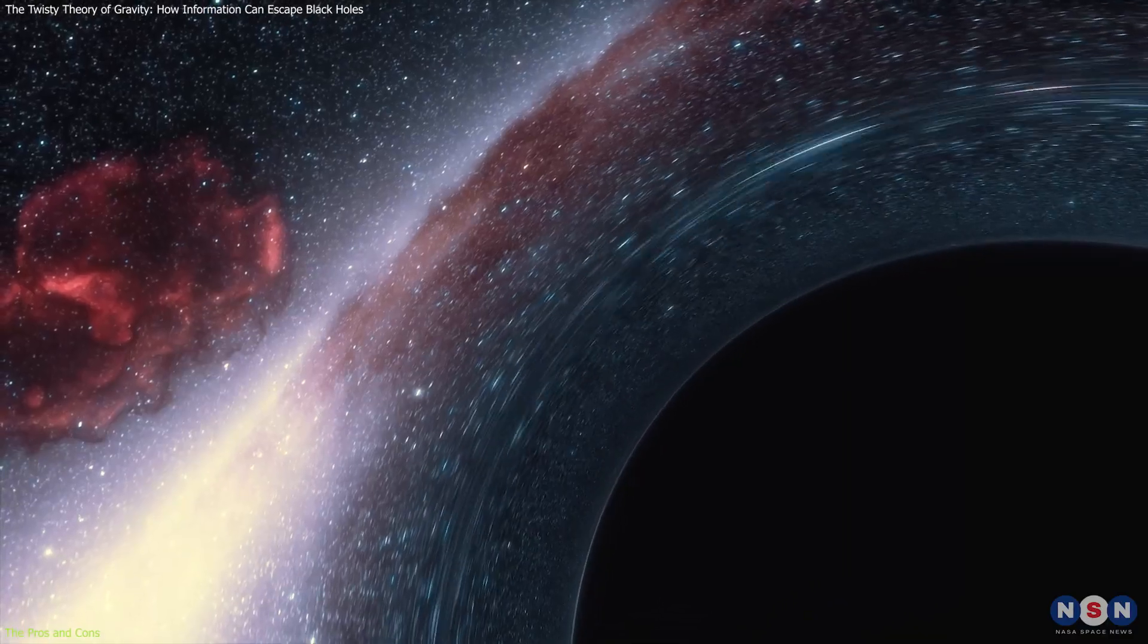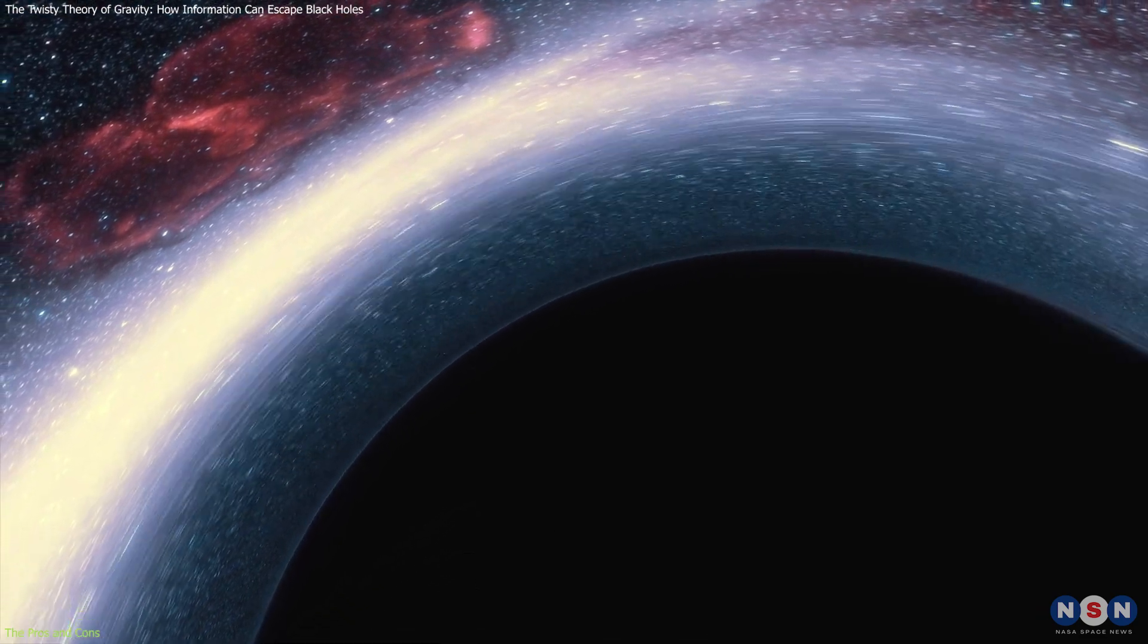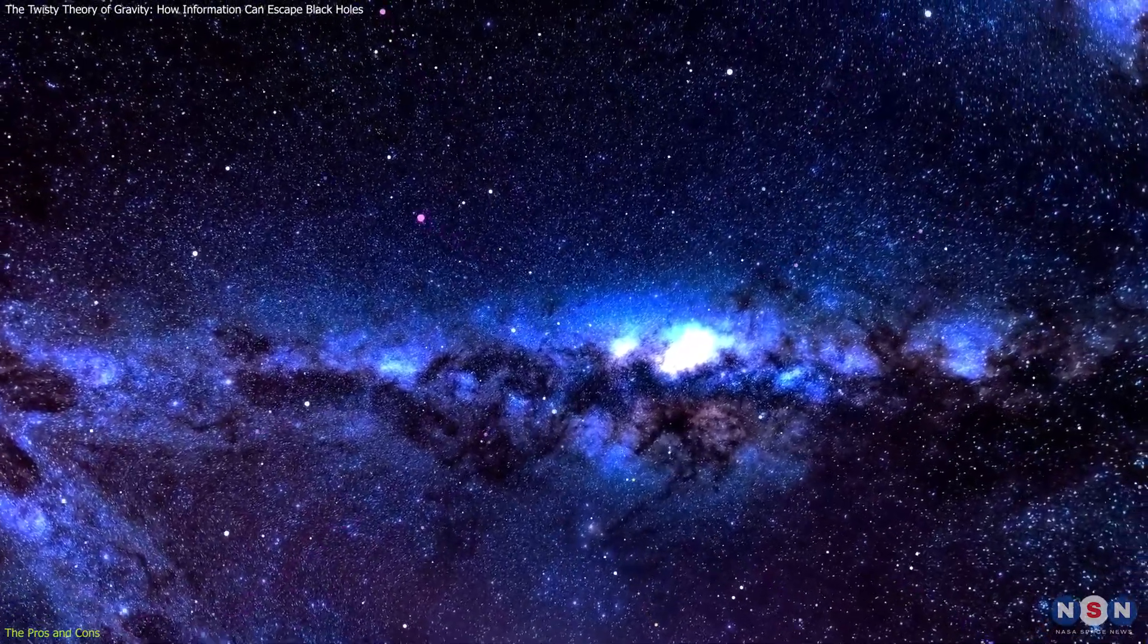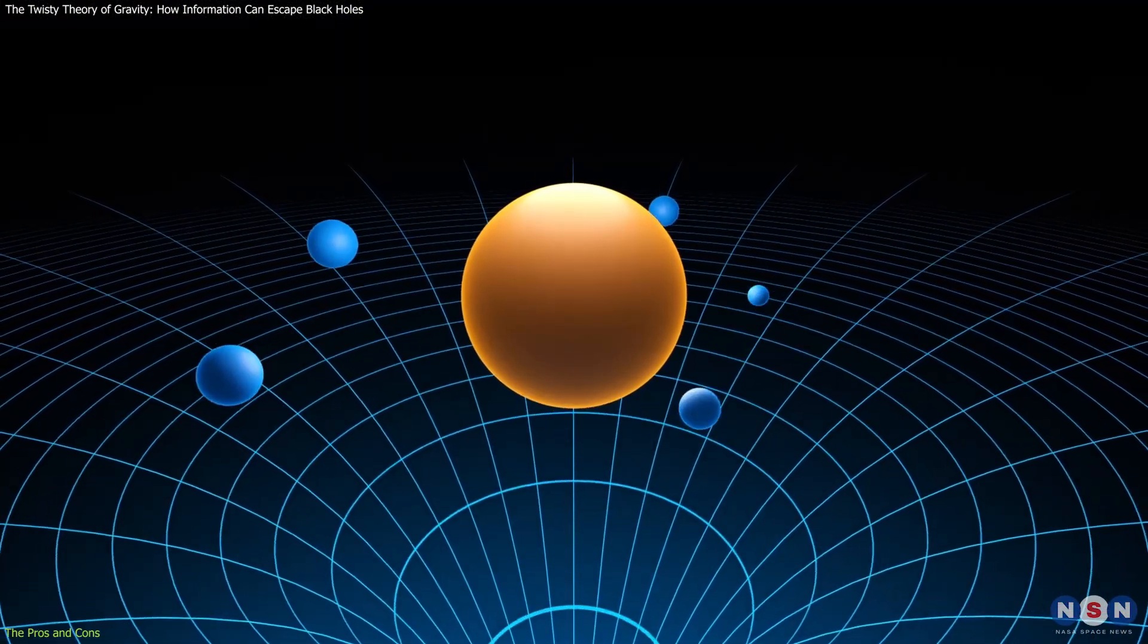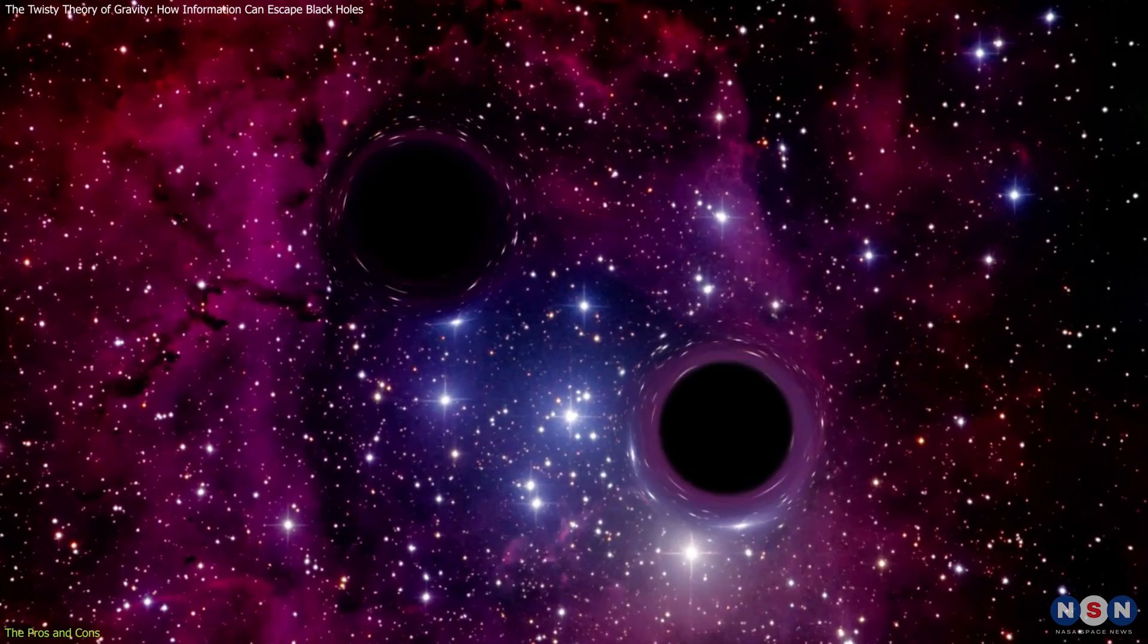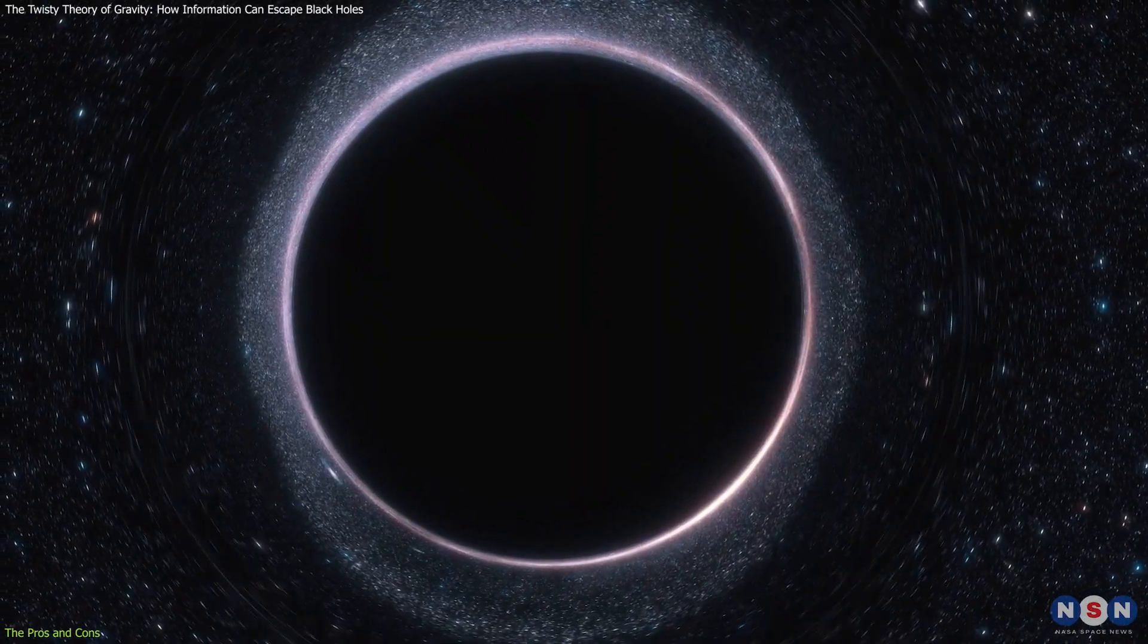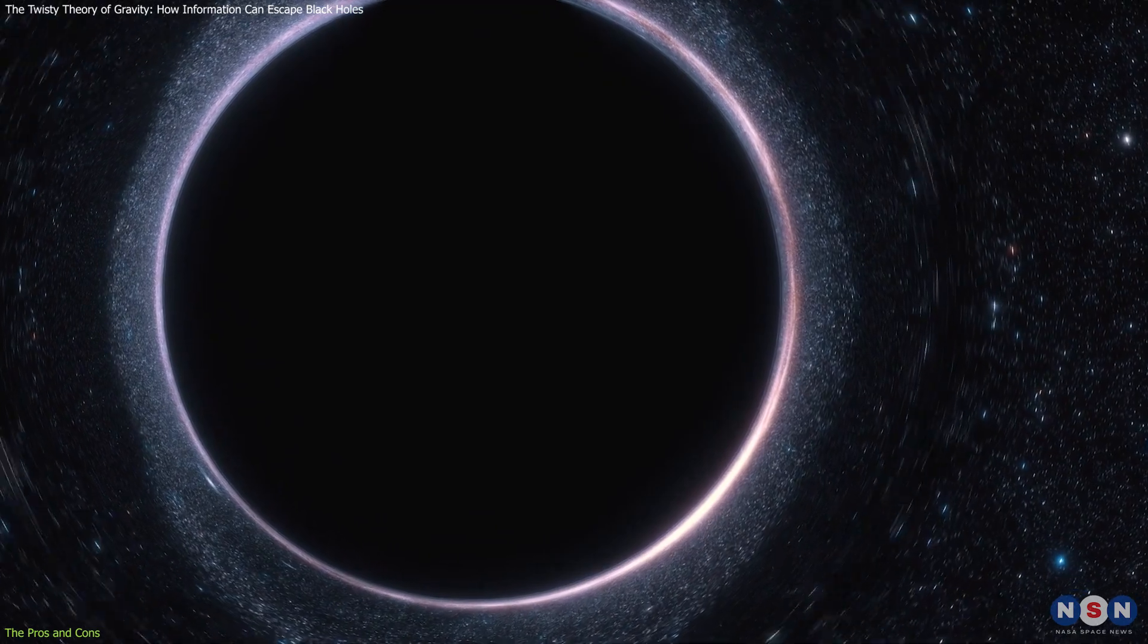The twisty theory of gravity is a bold and novel attempt to solve the black hole information paradox and understand the nature of quantum gravity. It is based on the idea that space and time are emergent from quantum information, and that gravity is an entropic force that arises from quantum entanglement. It also proposes that black holes have quantum hair that encodes information on their surfaces using twisters, and that information can escape black holes through quantum teleportation using twisters and Hawking radiation.